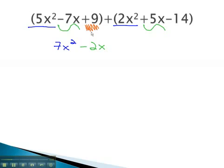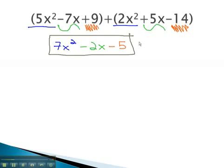Finally, the 9 is like the negative 14. 9 minus 14 will give us negative 5. This is our result we get when we add the polynomials together.